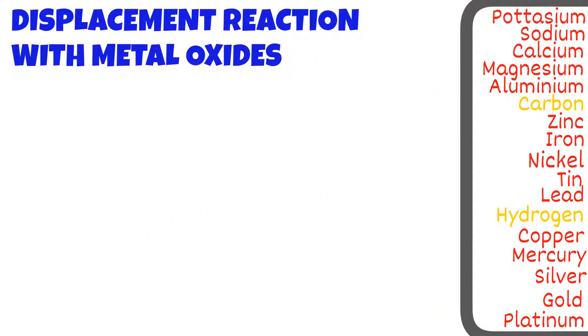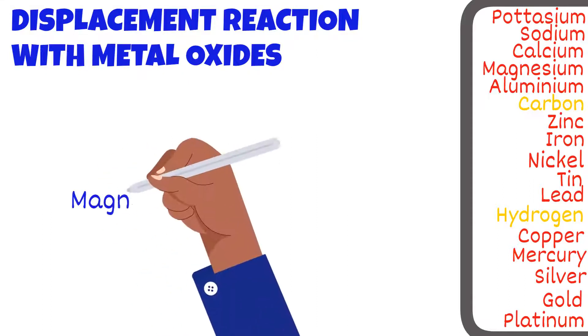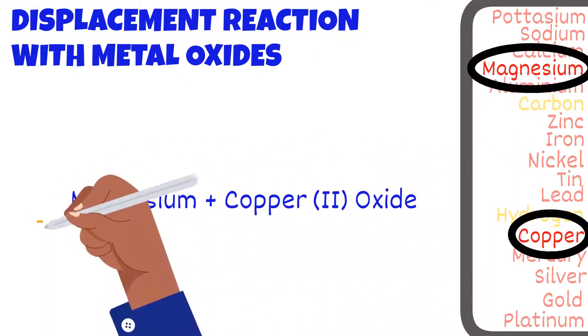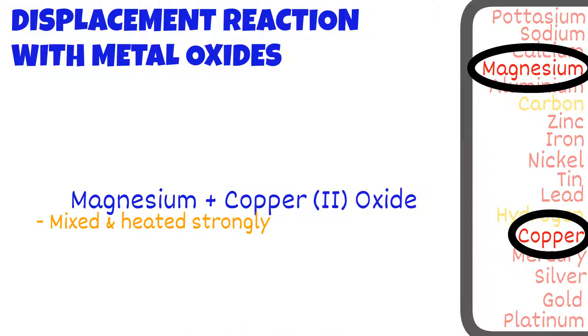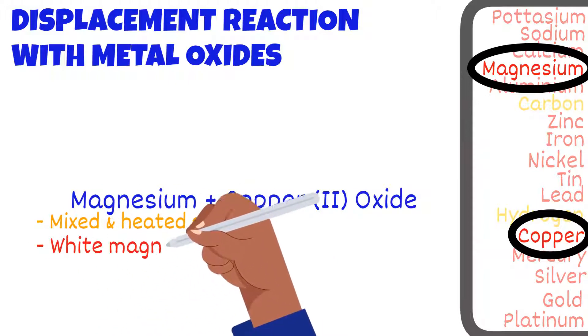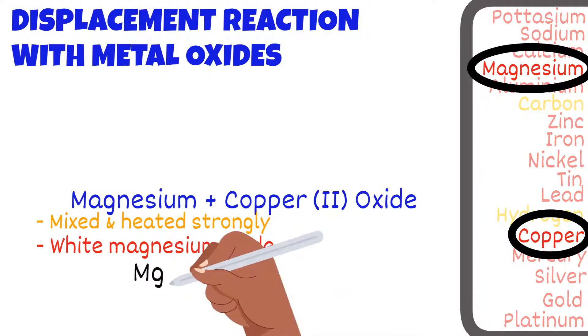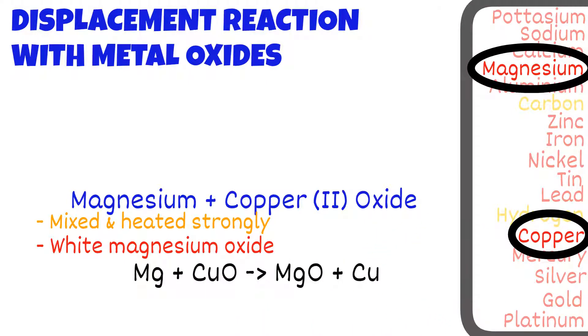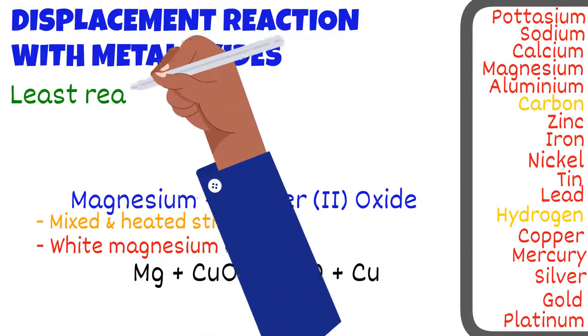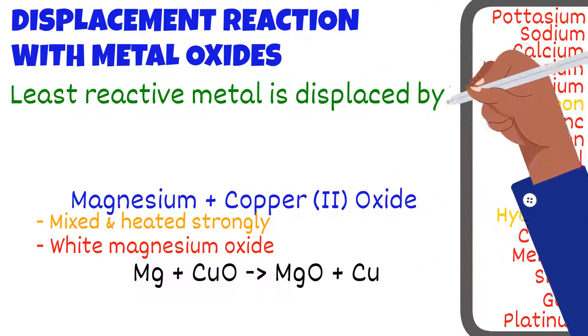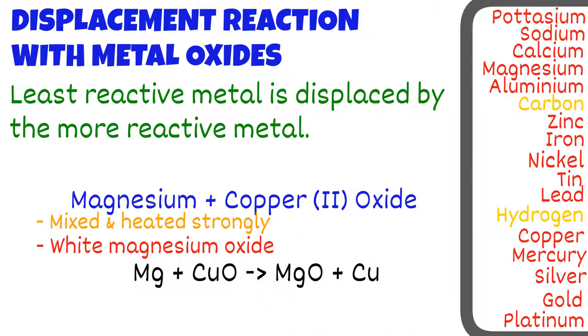Firstly, we'll take a look at the displacement reaction involving metal oxides. We'll start with the reaction of magnesium and copper oxide. When these two are mixed and heated strongly, the end result would be white magnesium oxide. What happened here is magnesium has taken copper's place and kicked it out. So the least reactive metal has been displaced from its compound by the more reactive metal. If you had heated copper and magnesium oxide, there would be no reaction since copper is less reactive than magnesium.